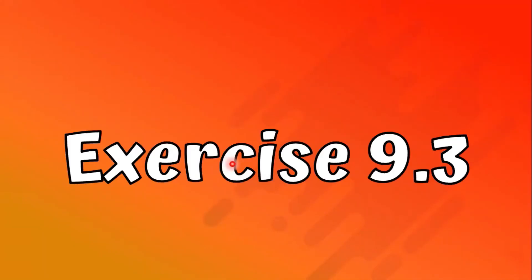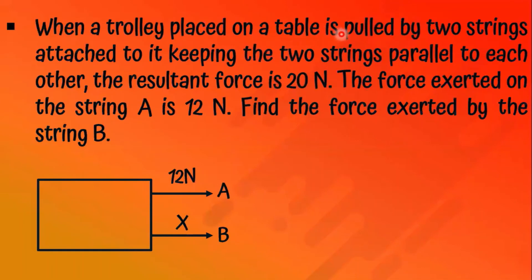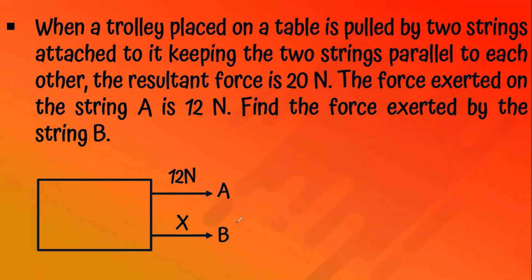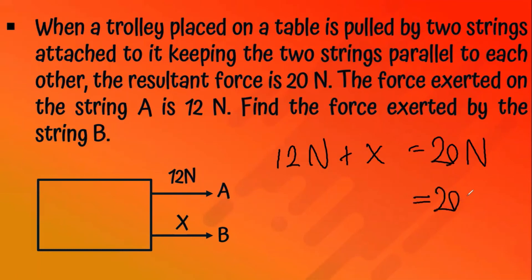Exercise 9.3: a trolley placed on a table is pulled by two parallel strings with a resultant force of 20 Newtons. The force on string A is 12 Newtons; find the force on string B (X). Since 12 N + X = 20 N, subtracting 12 from both sides: X = 8 Newtons.